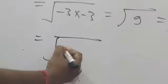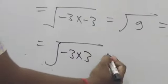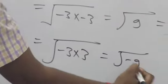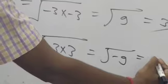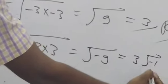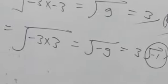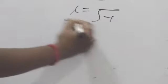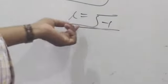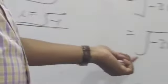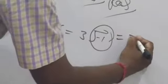But if it is √(-3 × 3), then here we get √(-9). Now -9 = 3 × √(-1). What is the value of √(-1)? That is i. So we can write 3i. Then 3 is the imaginary part.